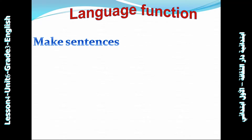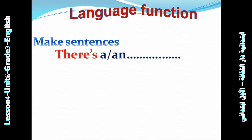Language function: make a sentence using 'there is' and 'there are'. We use 'there is' for singular, but 'there are' for plural. There is a or an... There are... You can describe a picture and make a sentence by saying 'there is' or 'there are'. For example,